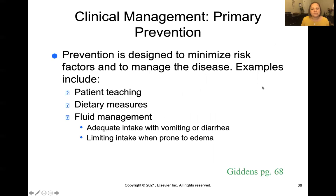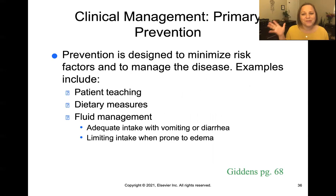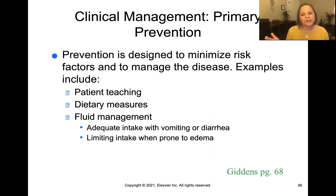The first one is primary prevention. An ounce of prevention is worth a pound of cure — prevention is way more important than trying to treat it later. So we're going to try to minimize risk factors and manage the disease, with things like patient teaching, dietary measures, and fluid management.